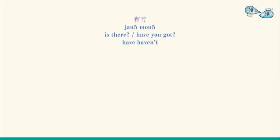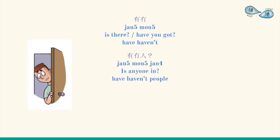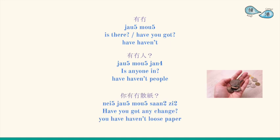For example, 有沒有 — 有 means 'have', while 沒有 means 'don't have'. Together, it means 'do you have?' For example: 有沒有人? (Is there anyone?) and 你有沒有散子? (Do you have change?)